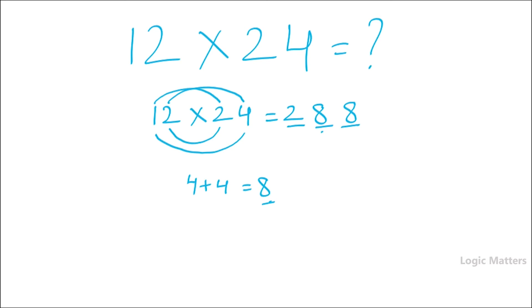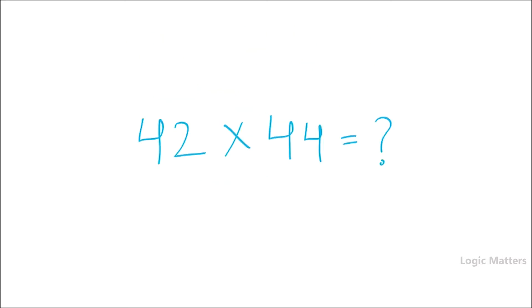Now let's go to the bigger number. Now apply the same logic to this number. So let's take this number now: 42 multiplied by 44. We'll take the three positions like we did in the earlier problem.